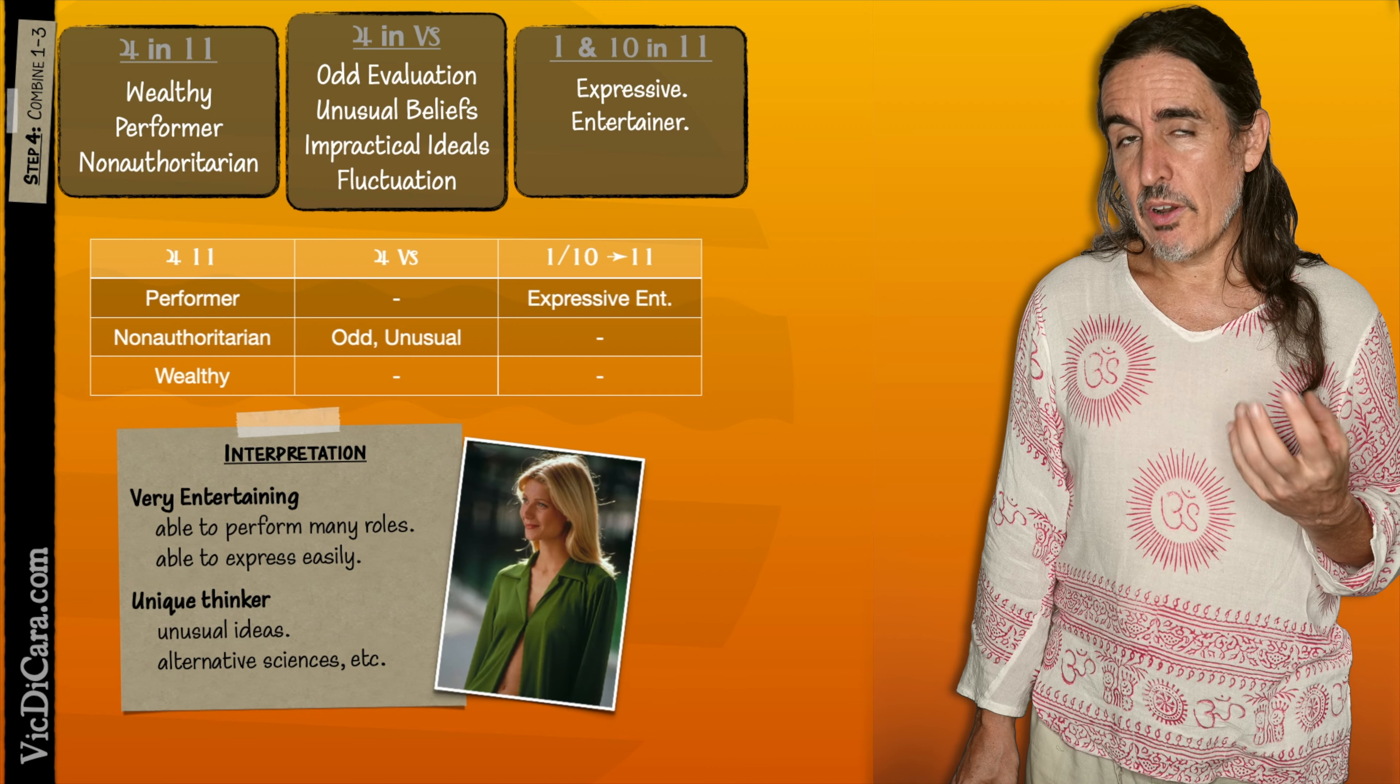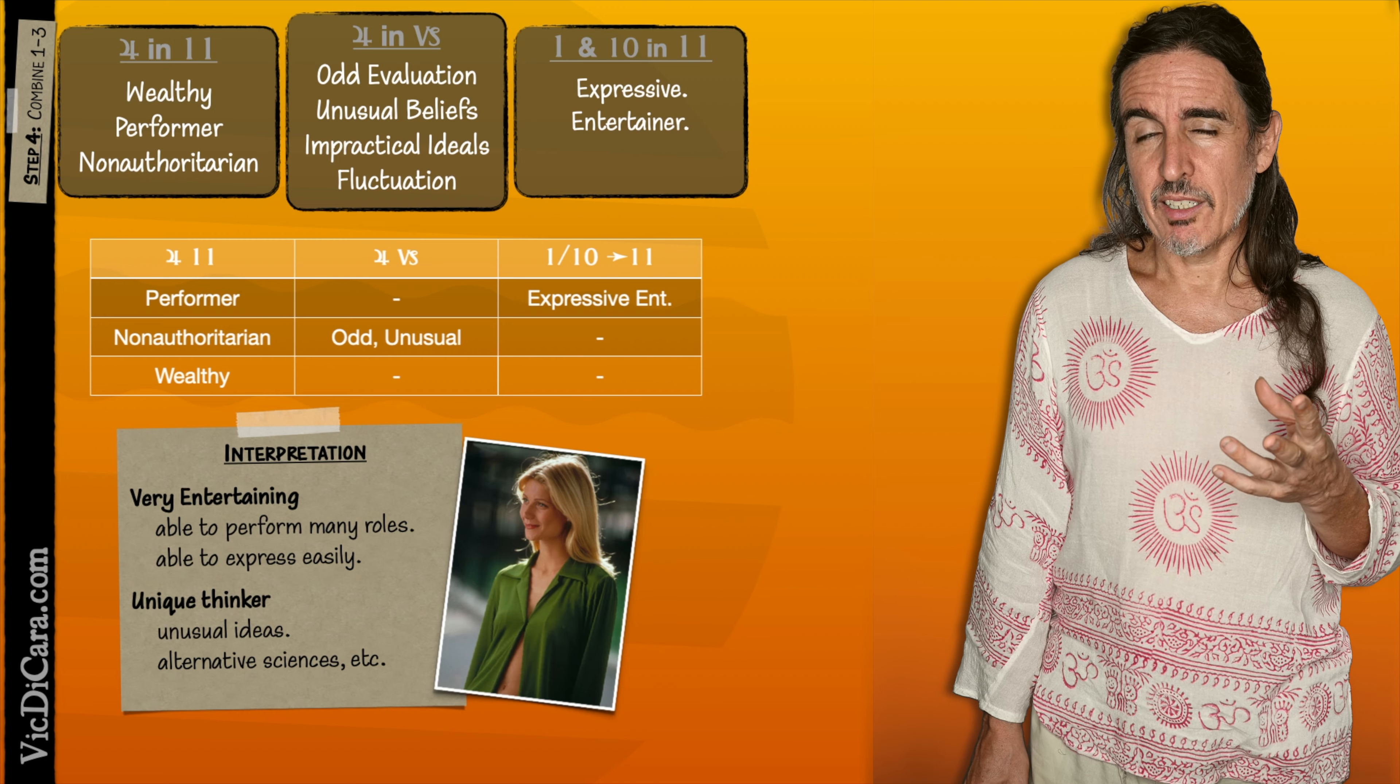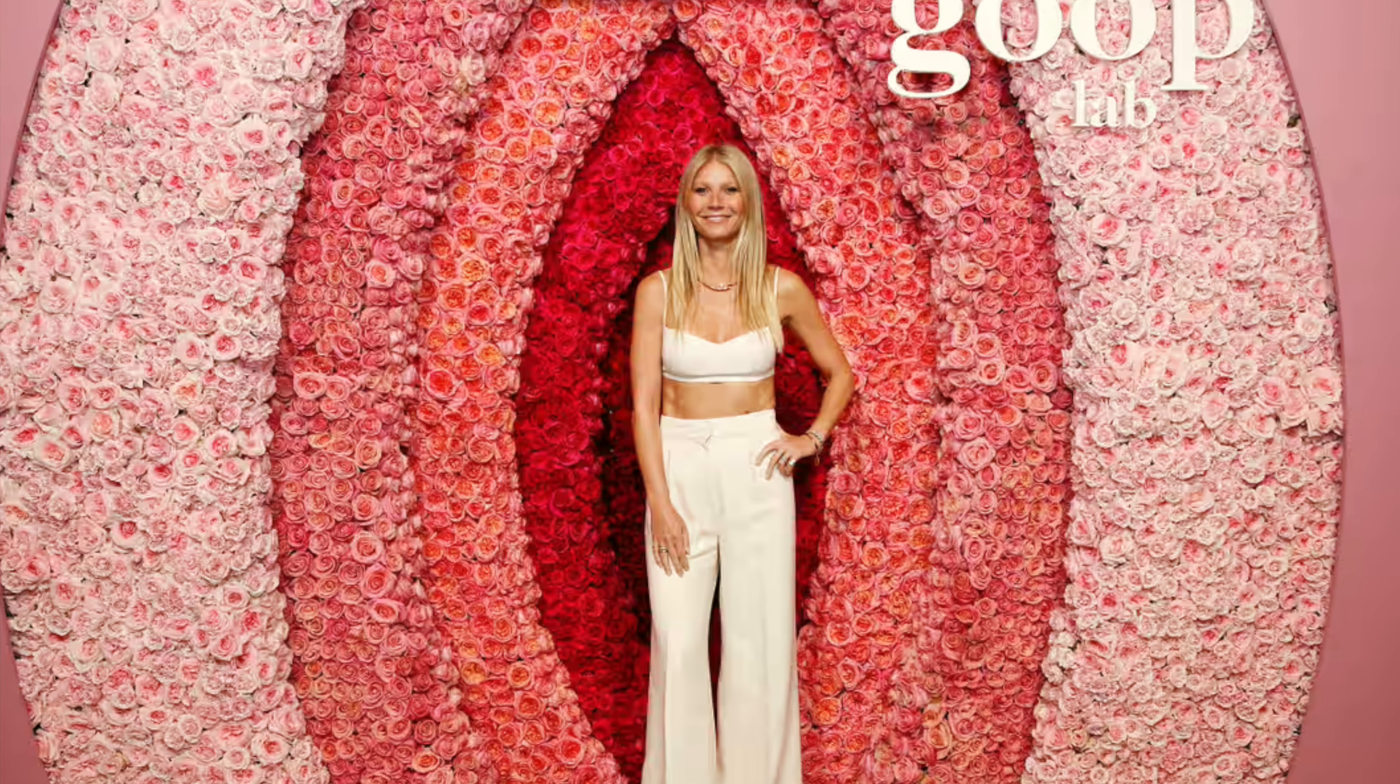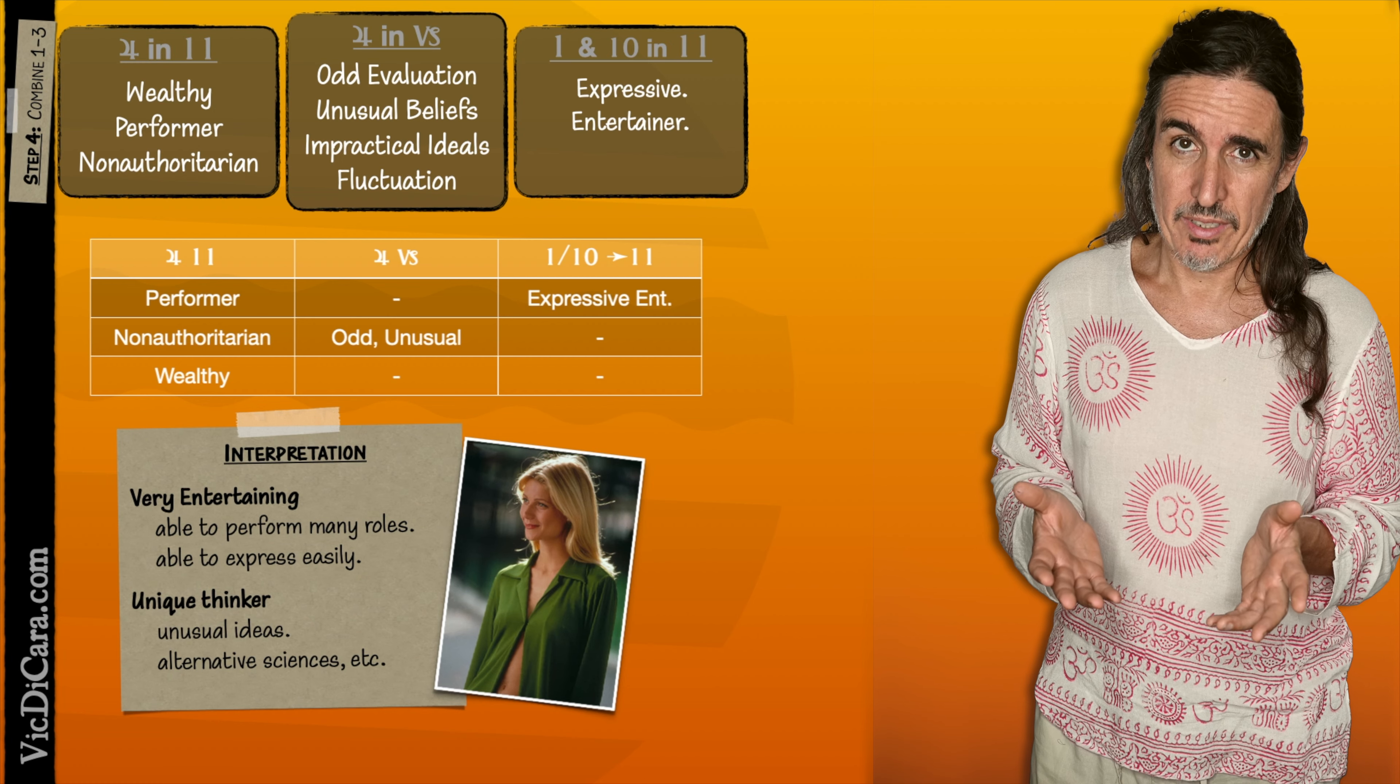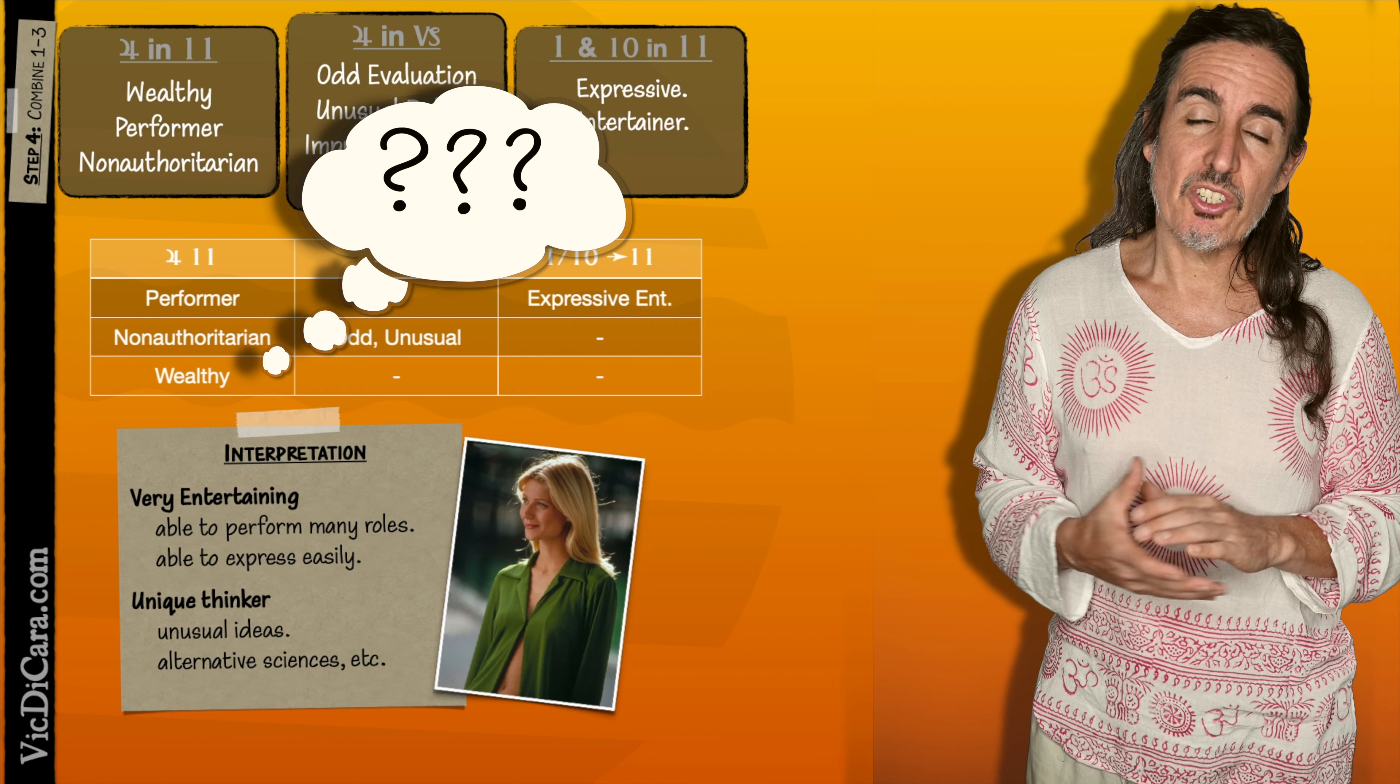So wow, very entertaining, able to perform many roles, very expressive. Unusual thinker. She really ticks this bell, right? The Goop company and very alternative medicine and all this kind of new-agey medicine. And this also will bring up the question of how come the wealth? Like this woman is super, super wealthy, but Jupiter in Capricorn in the 11th wasn't really supposed to highlight the wealth so much as some other combination like Jupiter in Cancer in the 11th. So why is she so wealthy?